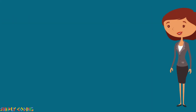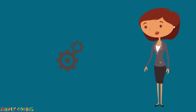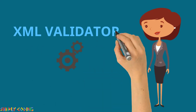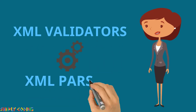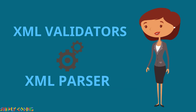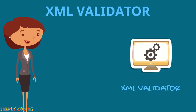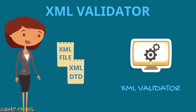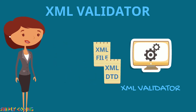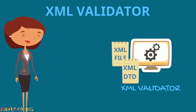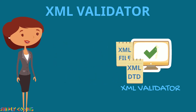There are two types of software that validate XML documents. One is an XML validator and the other is an XML parser. XML validators are software packages that check the XML document as per the specified DTD and give you feedback about the document.